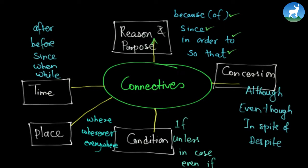After that we have concession, where we concede something. Words like 'although', 'even though', 'in spite of', and 'despite'. For example: in spite of the rain we played football. Despite the rain we played football. So these oppose the ideas — that's why they are called concessions. After that we have condition connectives. Words like 'if', 'unless', 'provided that', 'even if', and 'in case' come under this topic. For example: if you study hard, you get good marks — that is a condition connective.